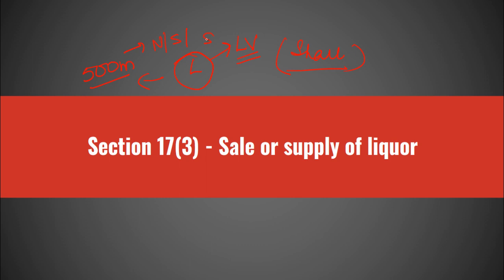On the third important point: notwithstanding any judgment, decree, or order of any court or tribunal, if a hotel has a license, it is entitled to supply of liquor within the premises of such hotel — irrespective of whether that hotel is near highways or within 1500 meters. If that hotel has a license, it is fully entitled to supply of liquor within its premises.